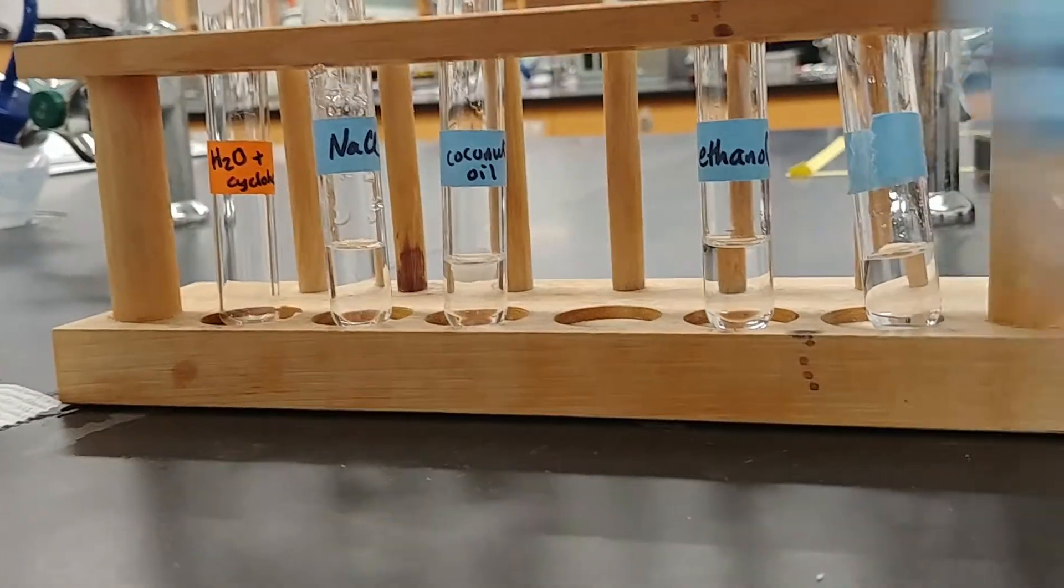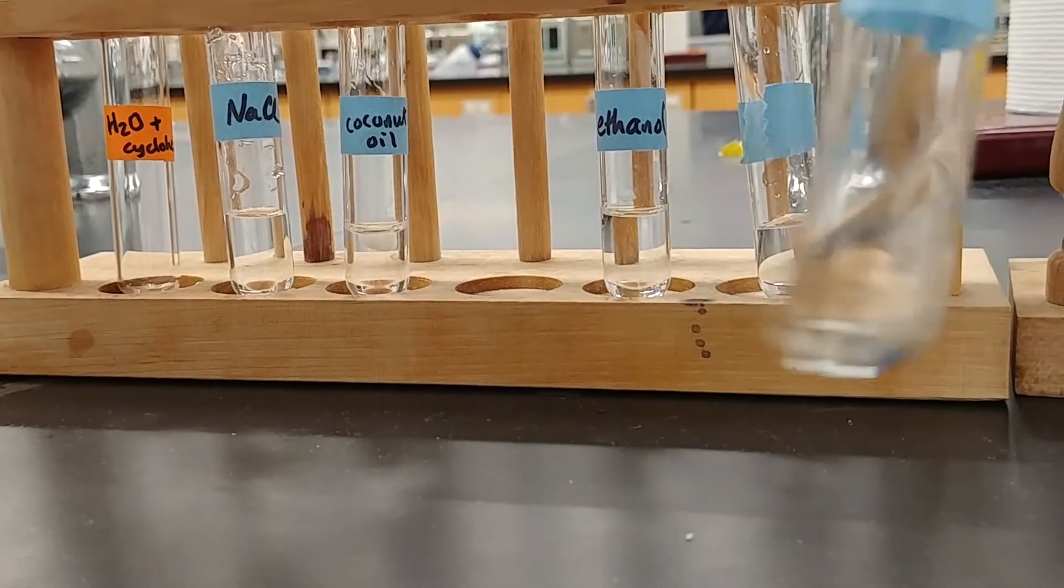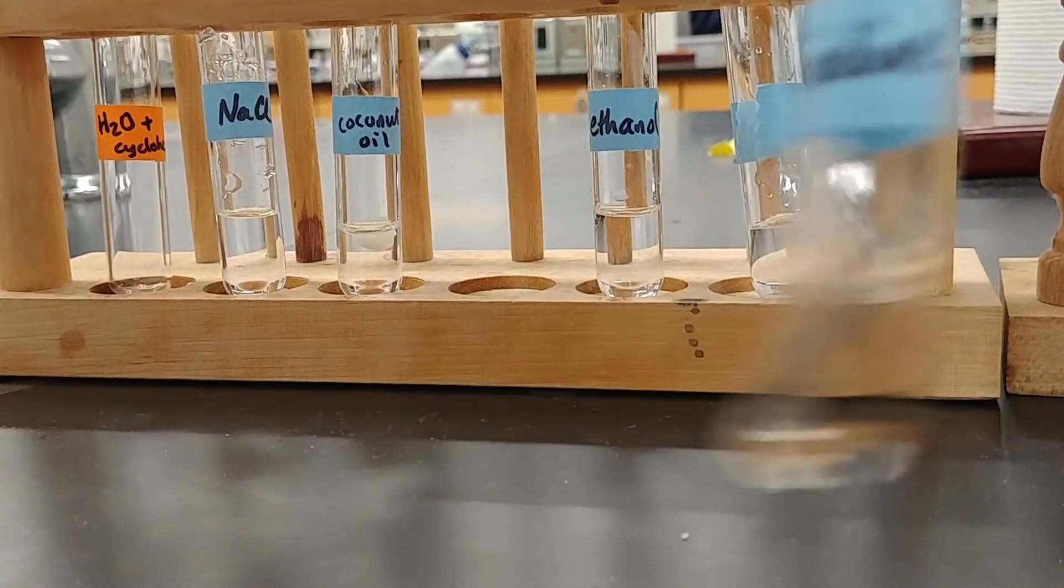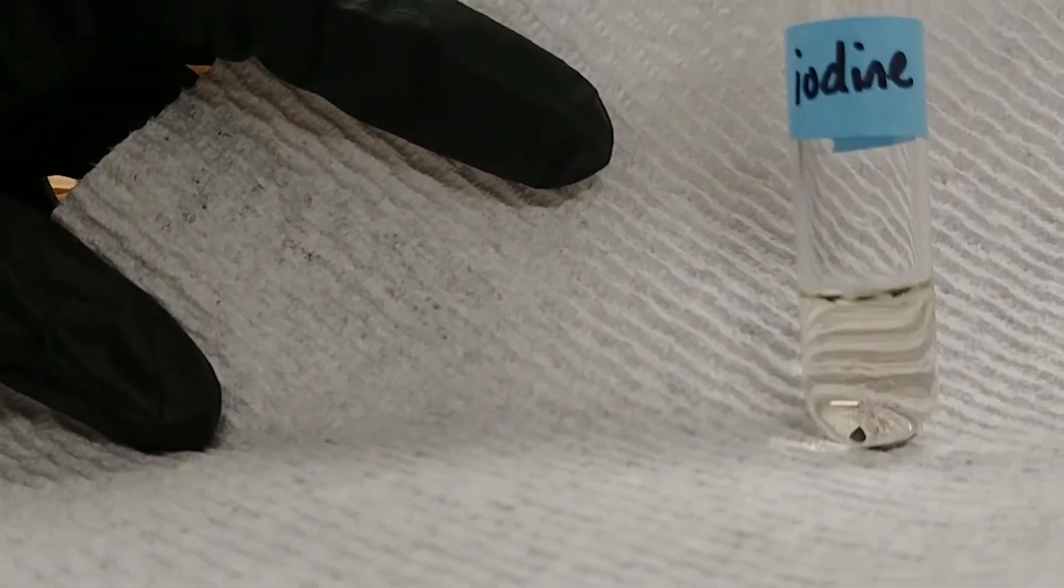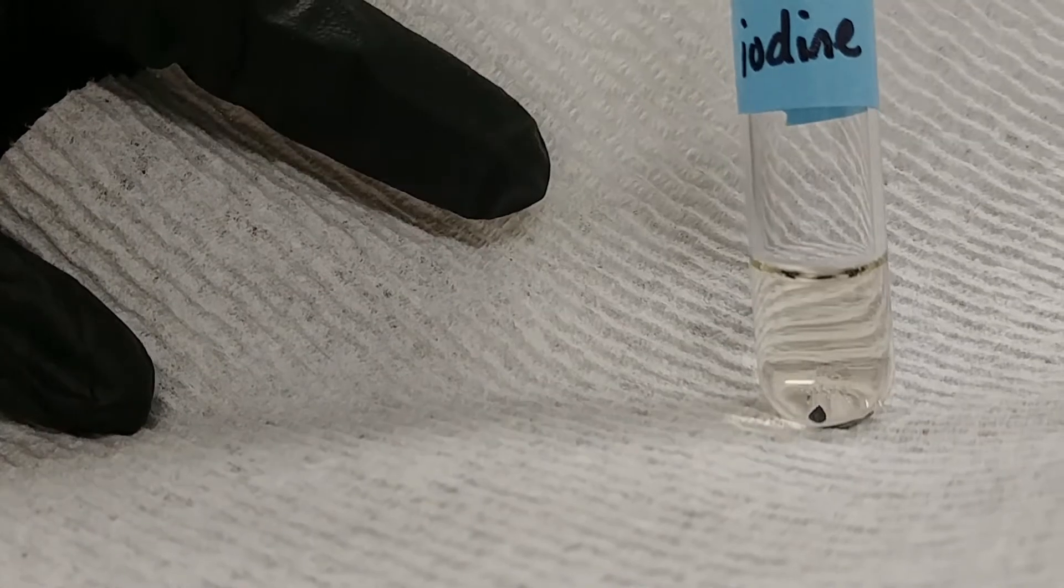Next is the iodine. This one is sometimes a bit interesting. I like to put something white behind it so you can see something a little bit interesting going on there. The iodine sort of very faintly colors the water.